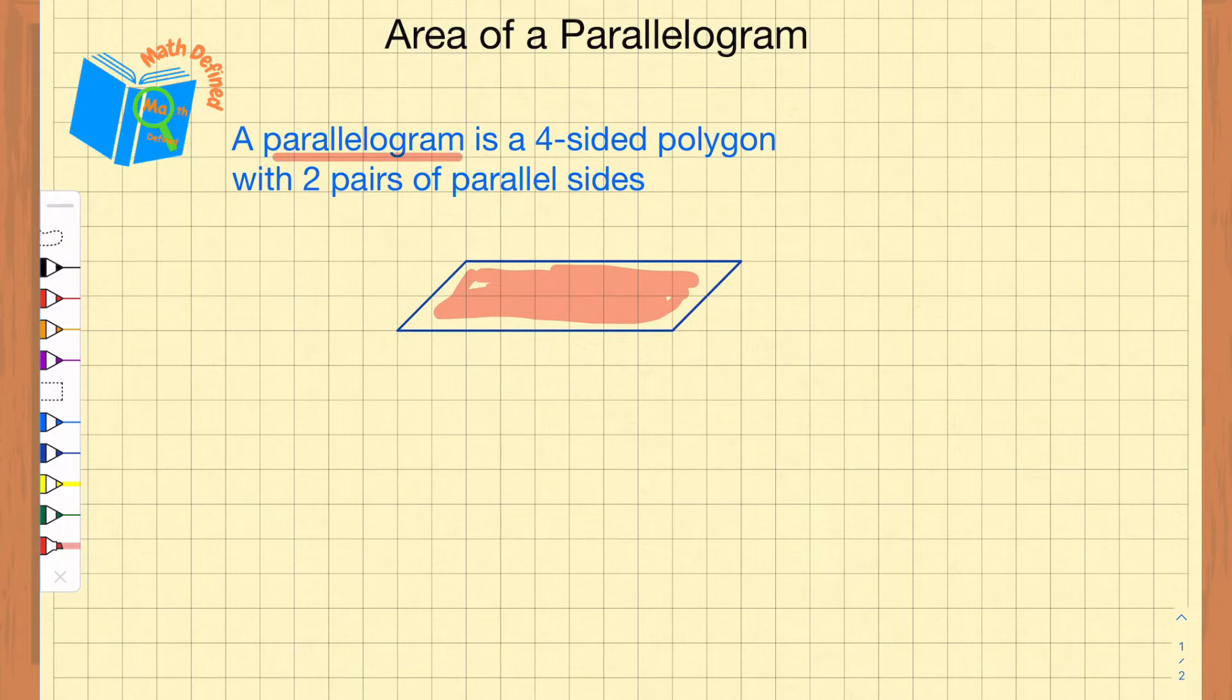I'm going to start off by looking at the formula first. The formula to find the area of a parallelogram looks like this. We write a capital A, which stands for area, and that is going to be equal to the length of the base times the length of the height. We just multiply those two things together, and that gives us the area for this parallelogram.